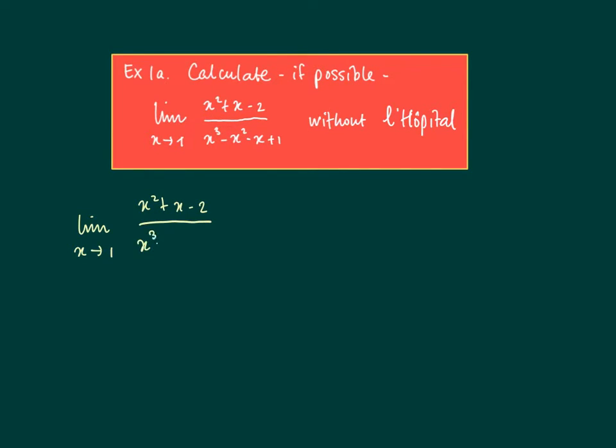Well, what we see, if we rewrite this fraction, is that the numerator goes to 0 and the denominator goes to 0. So what we actually see is that we can factorize both the numerator and denominator, and we can take out the linear term x minus 1.